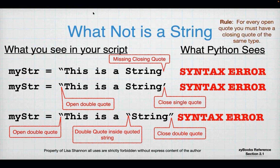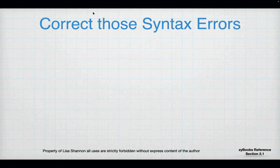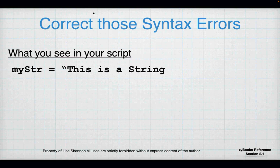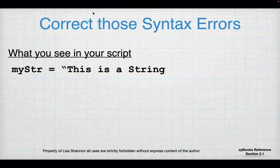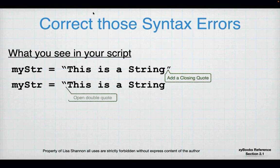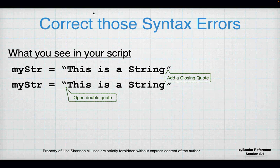For every open quote, you must have a closing quote of the same type. So how do we correct those syntax errors? The first one is pretty easy — it was missing a closing quote, so we add a closing quote. The second one had an opening double quote and a closing single quote, so we replace the closing single quote with a closing double quote.